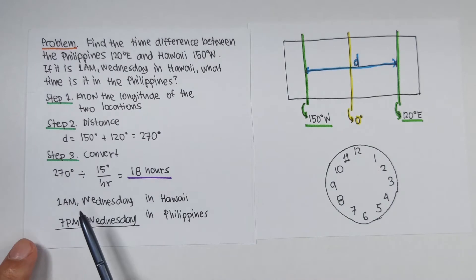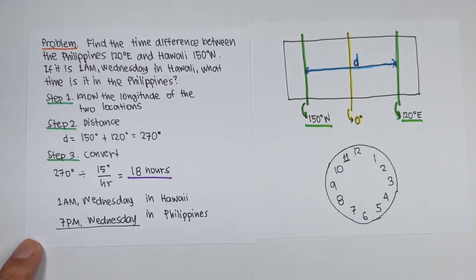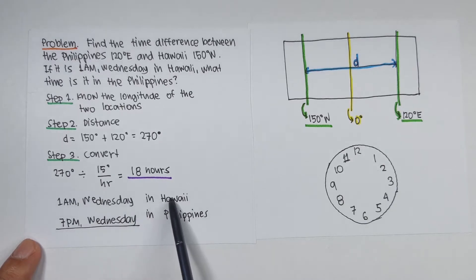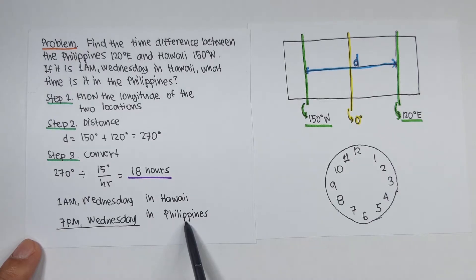Counting 18 hours forward, it is 7 p.m. Wednesday. So if it is 1 a.m. Wednesday in Hawaii, then it is 7 p.m. Wednesday in the Philippines.